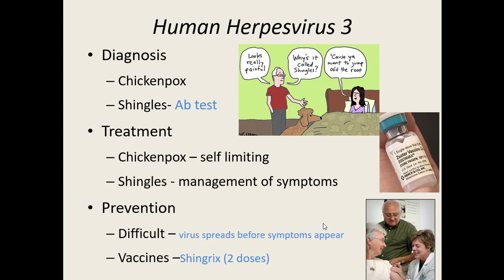Prevention can be difficult because the virus can be spread before symptoms even occur. However, we have the chickenpox vaccine. And if you've ever had chickenpox, we now have the Shingrix vaccine — a two-dose vaccine that works really effectively at boosting your immune system to keep that virus at bay.